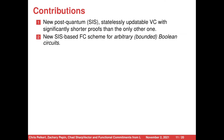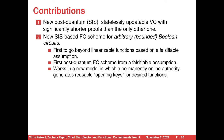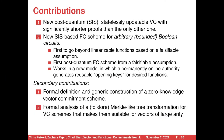We also provide a new SIS-based functional commitment scheme for arbitrary bounded Boolean circuits, which goes way past linearizable functions. This is the first functional commitment scheme based on a falsifiable assumption to go past linearizable functions, and the first post-quantum functional commitment scheme from a falsifiable assumption. Our new FC scheme works in a new model in which a permanently online authority that generated the public parameters generates reusable opening keys for any desired function. We also provide two secondary contributions: a formal definition and construction of a zero-knowledge vector commitment scheme, and a formal analysis of a long-known folklore Merkle-like tree construction that adapts vector commitment schemes to work for vectors of very large arity.